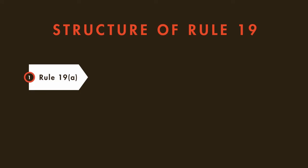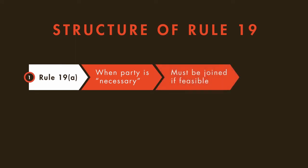Rule 19a covers the three basic situations in which parties will be deemed necessary. Again, a necessary party must be joined if joinder is feasible.